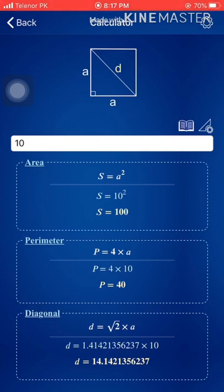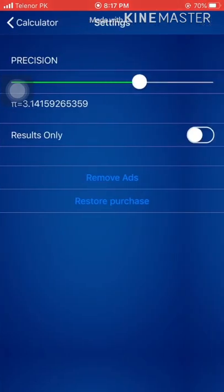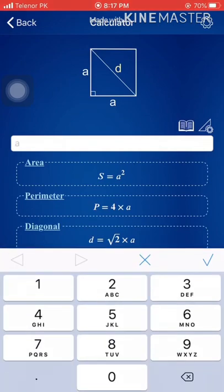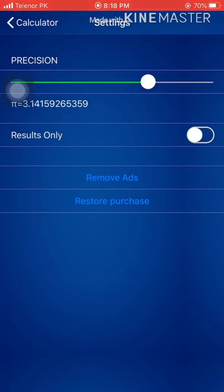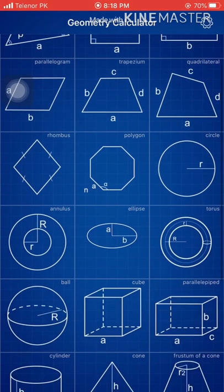If you don't want the full calculation and only need the answers, you can switch this on or off from the Settings tab, which is located at the top right corner. You can also change the precision from here. The results-only option is now switched off — you can switch it on from here. Let me go back. Let's say the side is now five units — as you can see, it shows me only the results, not the detailed solution.